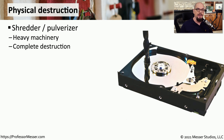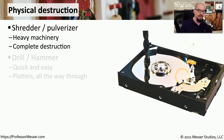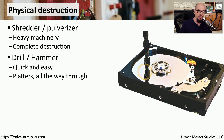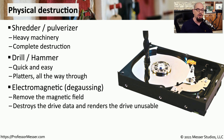One way to prevent anybody from gaining access to the data stored on our storage devices might be to physically destroy our hard drives and other storage media. You might want to use a shredder or a pulverizer to do that, or simply use a drill to put a hole directly through the hard drive, which would mean no one would be able to read anything on that drive. You could also use a hammer to break these platters, which would also prevent anyone from recovering any data. You can also use a strong magnetic field, which is a degausser.